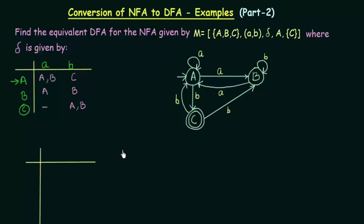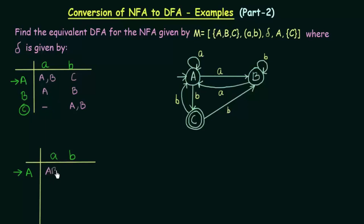We will use the subset construction method discussed in the previous lecture. I will use a table to convert this NFA transition table to the equivalent DFA transition table, with inputs A and B. Starting with the initial state A: A on getting input A goes to two states A and B, but in a DFA a state on getting a particular input can go only to one state. So I will combine A and B into a new state called AB. And A on getting input b goes to state C.